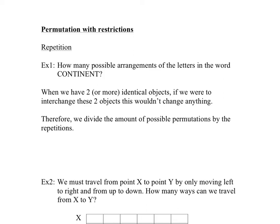What happens when you have permutations with restrictions? The first restriction we're going to deal with is repetition. How many possible arrangements of the letters of the word continent? Whenever we have two or more identical objects, for example, N and N are identical. If I was going to move this N over here and move this N over here, I would not actually change anything. If we were to interchange these two objects, nothing would change.